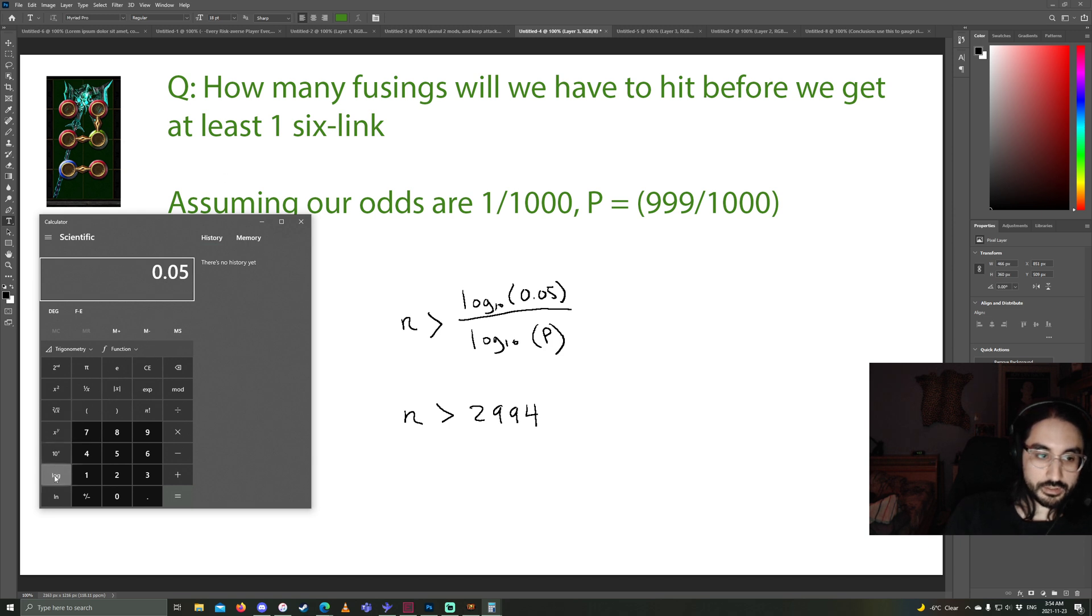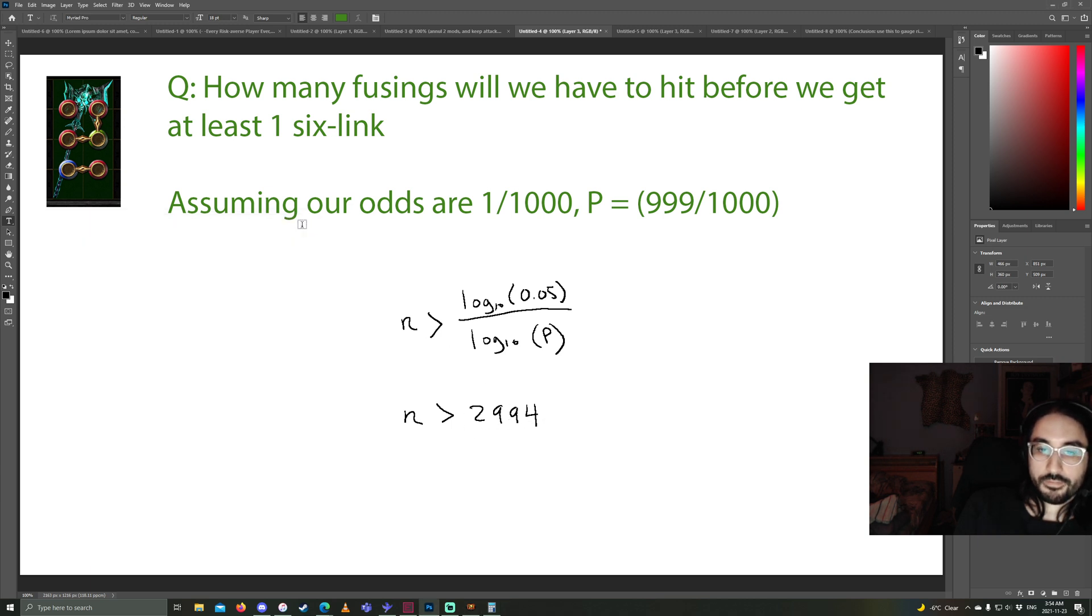So let's pull up the calculator again. Take the 0.05 log divided by bracket 999 out of 1,000. Close bracket. Log. Now press the equal sign. The answer is 2,994. So what did this mean? N needs to be greater than 2,994. This means, if you're rolling for a 6 link, it is extremely unlikely that you will not hit at least 1 after spending 2,994. Now, maybe you don't feel so bad when you've spammed well over 1,000 and you still haven't hit it. Actually, probably you still feel bad.